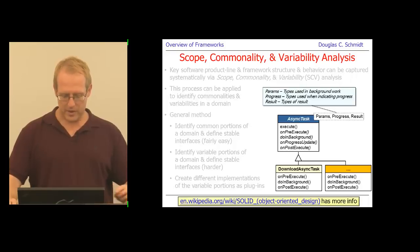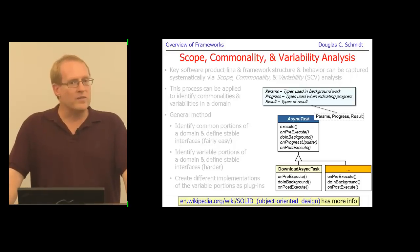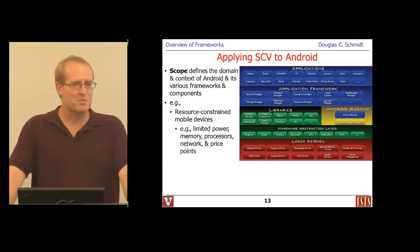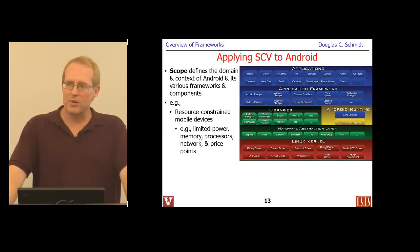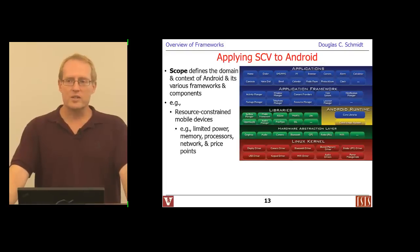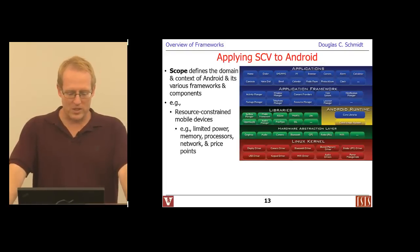Given that background, let's talk a little more about how we might apply scope commonality and variability analysis to think about Android itself at a more macro level. At the top level, let's talk about Android from the point of view of scope. What's the scope of Android? It's actually pretty interesting — if you go listen to some of the talks given by the developers of Android, like Google I/O conference talks, you can see what they were trying to solve.